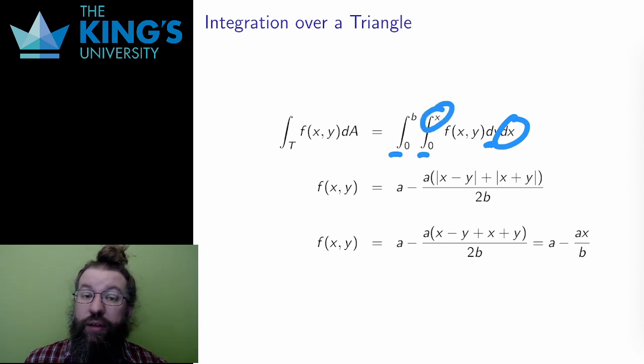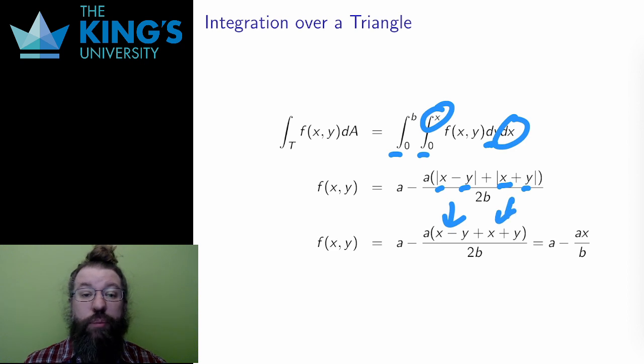In this region, the triangle, x is always larger than y, and both x and y are positive. Therefore, I can drop both absolute value bars and simplify the integral into something I can actually work with. This produces an integral I can actually calculate.